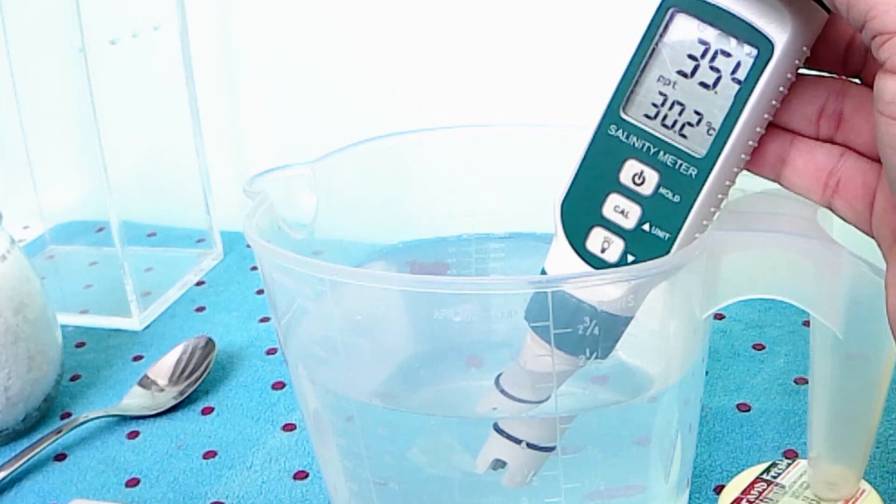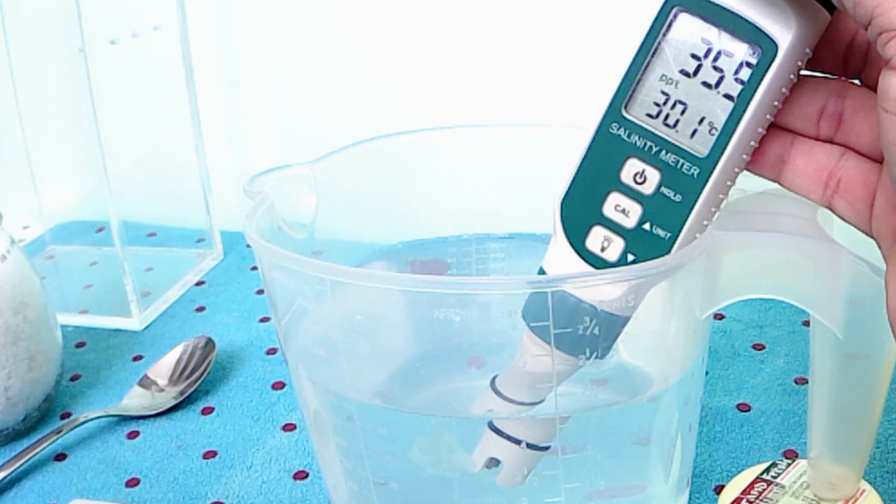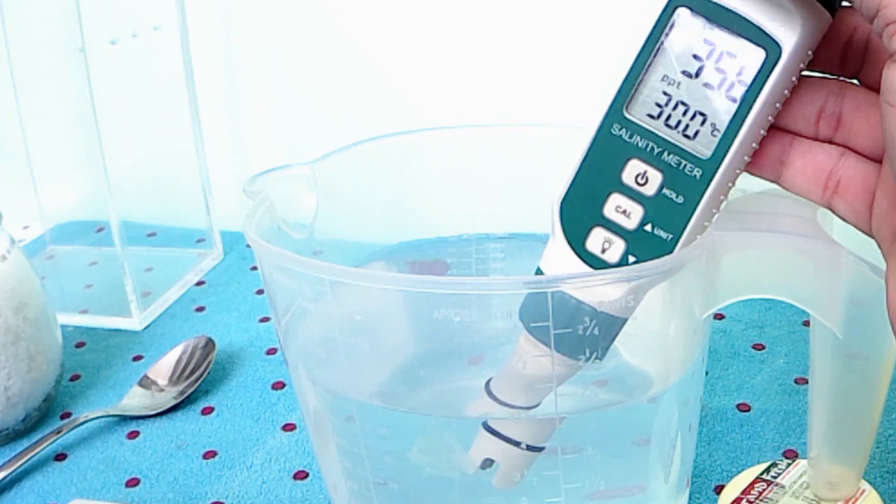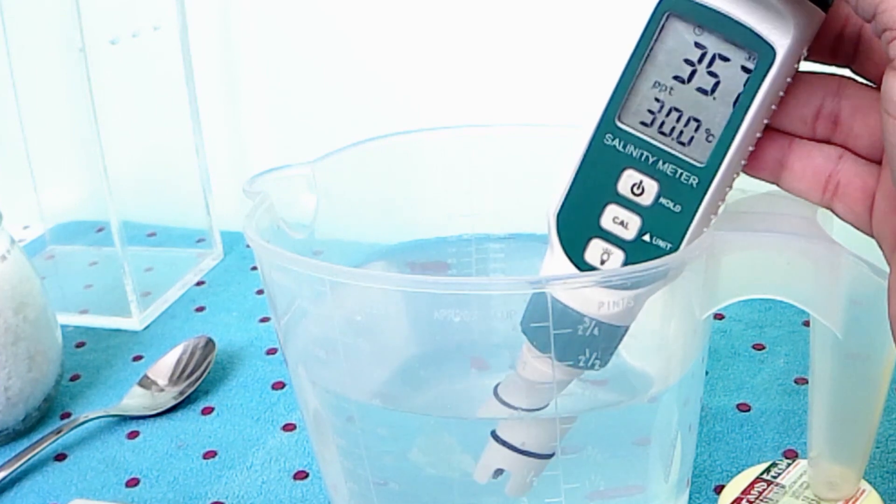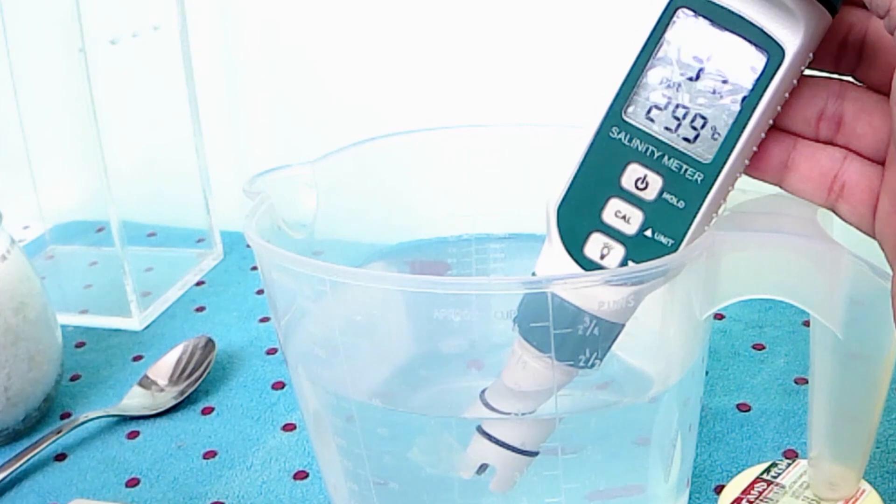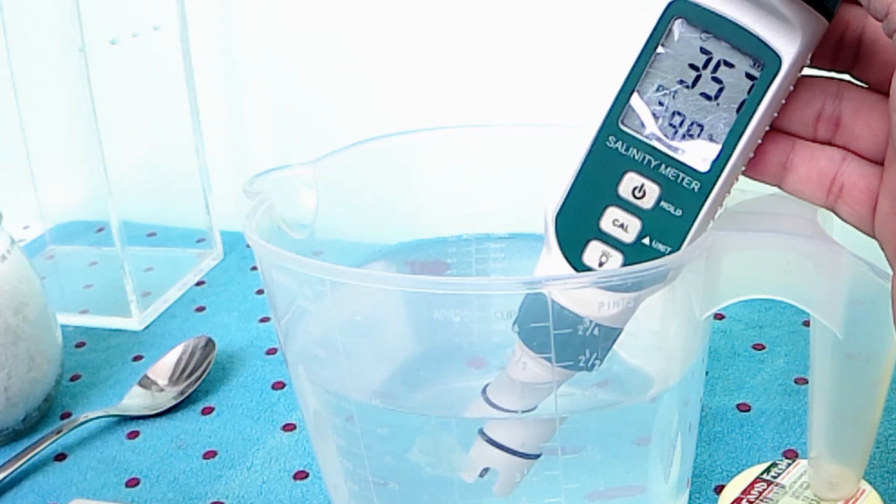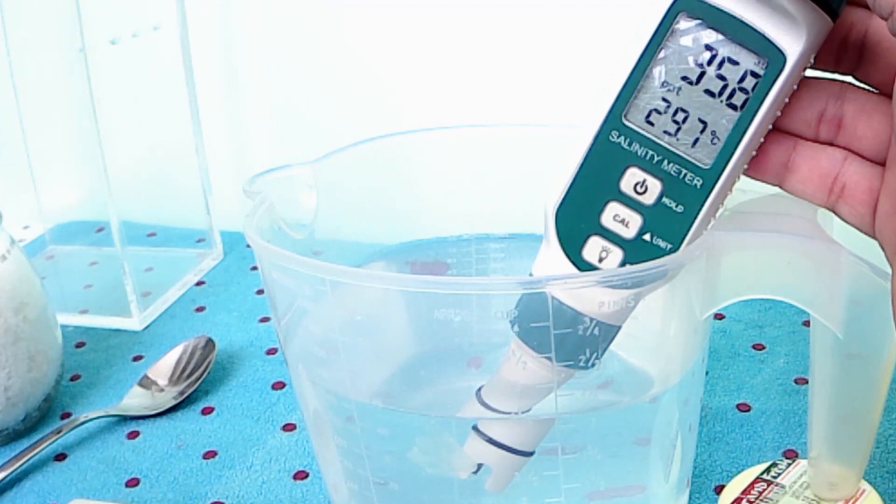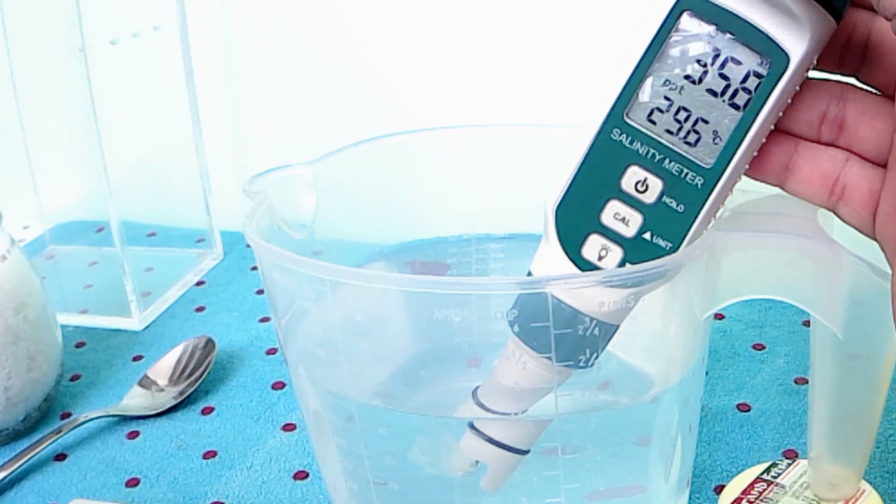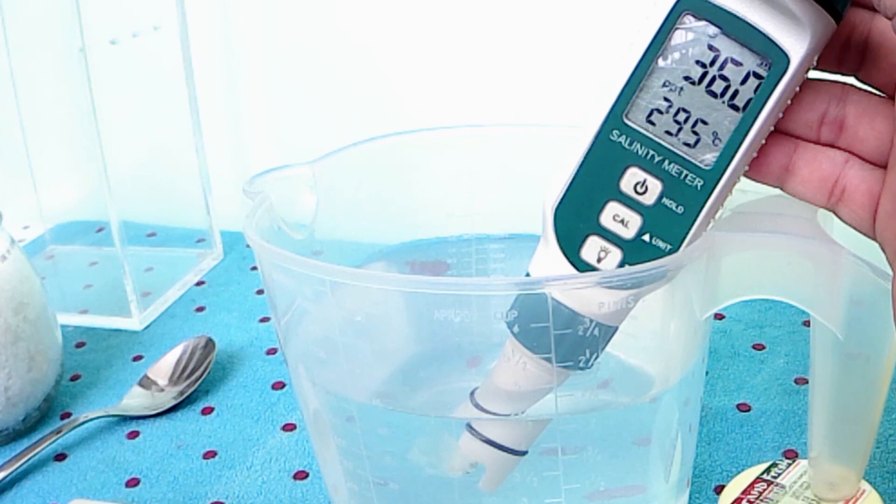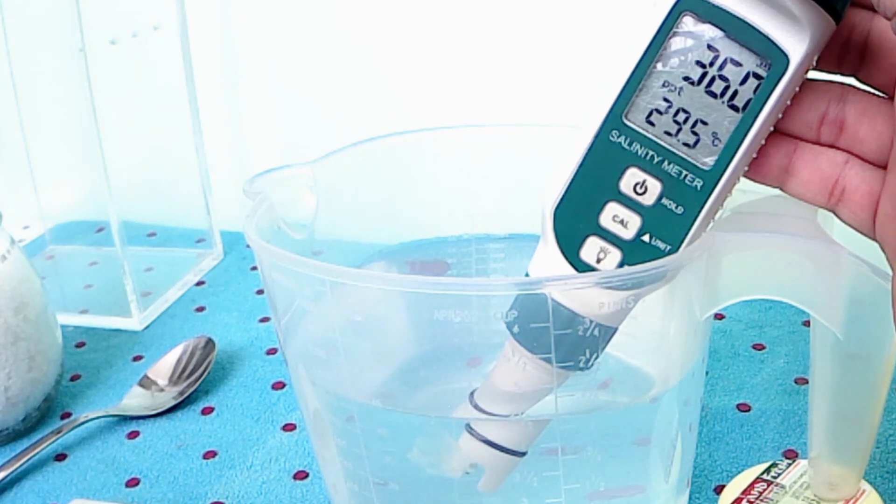Brine shrimp can tolerate a higher salinity level. I will try to stabilize my salinity between 35 to 36 parts per trillion. I think we are very close. 36 parts per trillion, that's what I'm looking for.